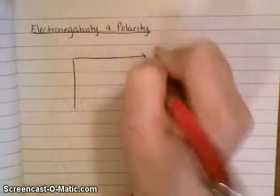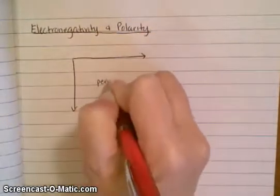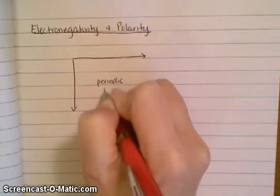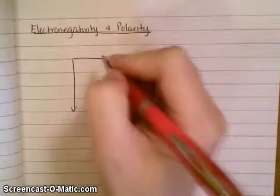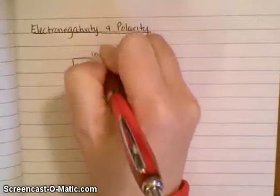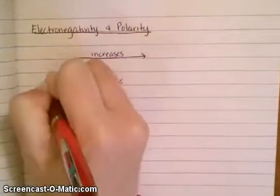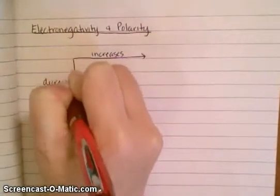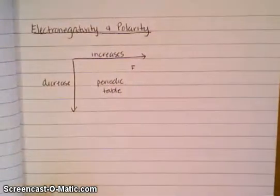Well, there's actually a trend for electronegativity. You can assume this is the periodic table. As we go to the right, the electronegativity increases, and as we go down it decreases.